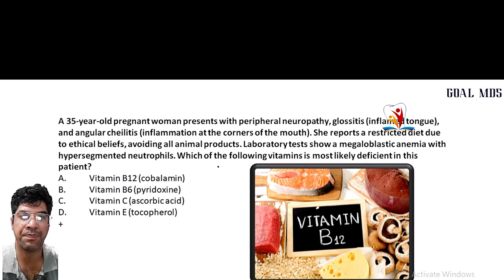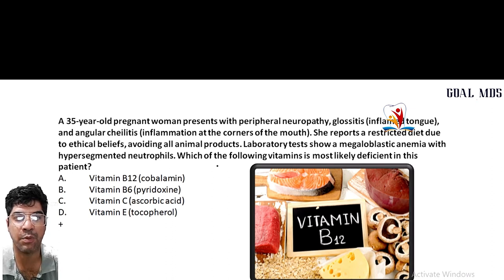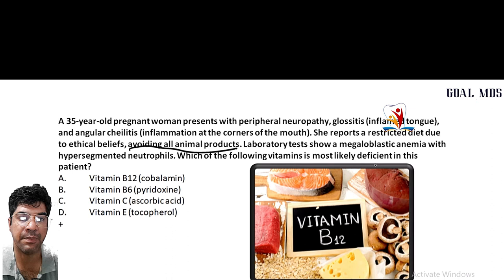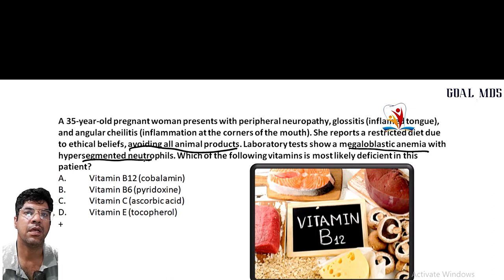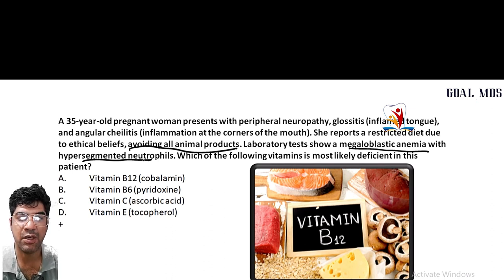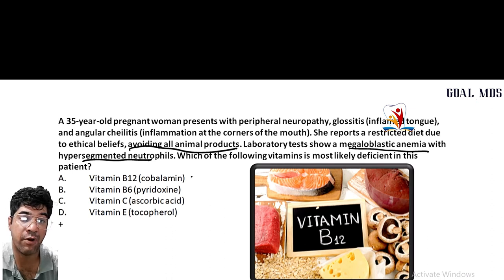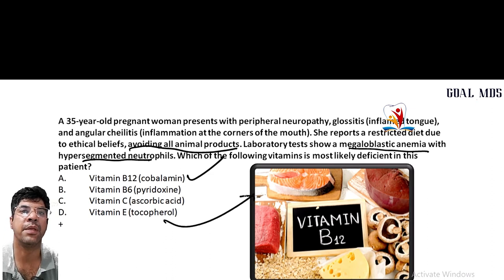The next question: a 35-year-old pregnant woman presents with peripheral neuropathy, glossitis (inflamed tongue), and angular cheilitis (inflammation at the corners of mouth). She reports a restricted diet avoiding all animal products. Laboratory tests show megaloblastic anemia with hypersegmented neutrophils. The clinical presentation is highly suggestive of vitamin B12 deficiency.